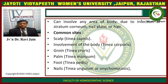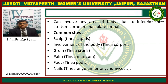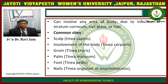It can involve any area of the body due to infection of the stratum corneum, nail plate or hair. The common sites include the scalp — known as tinea capitis — involvement of the body known as tinea corporis, groin region tinea cruris, palm tinea manum, foot tinea pedis, and nails known as tinea unguium or onychomycosis.